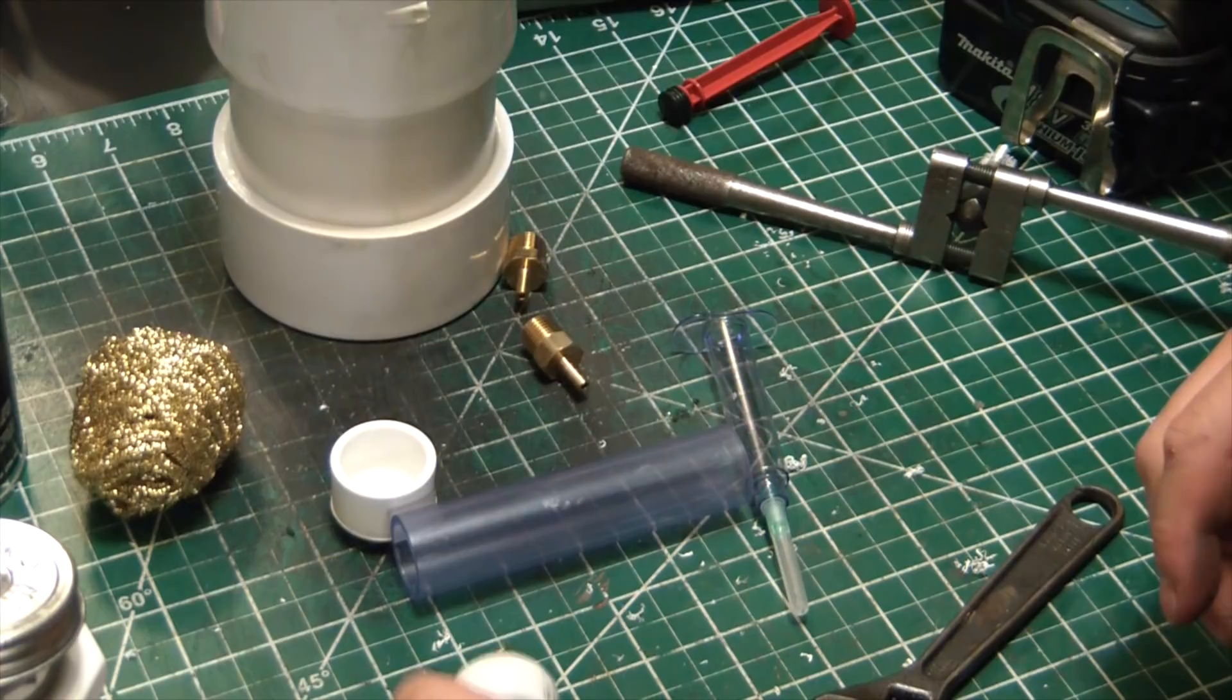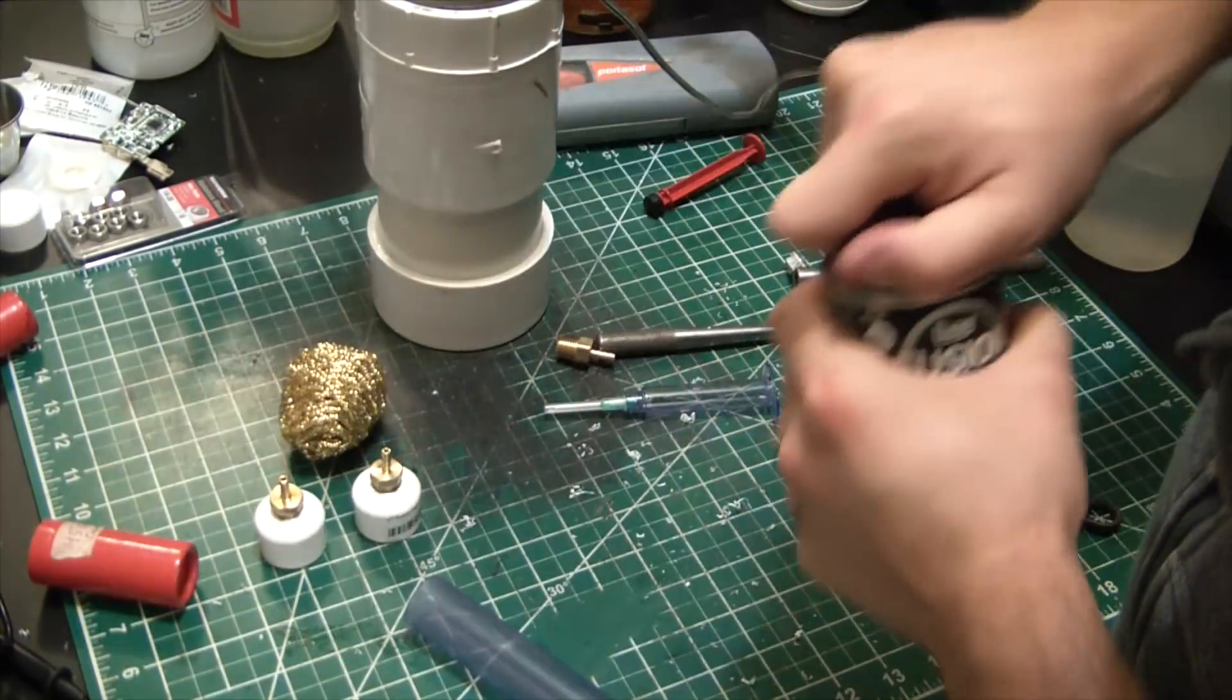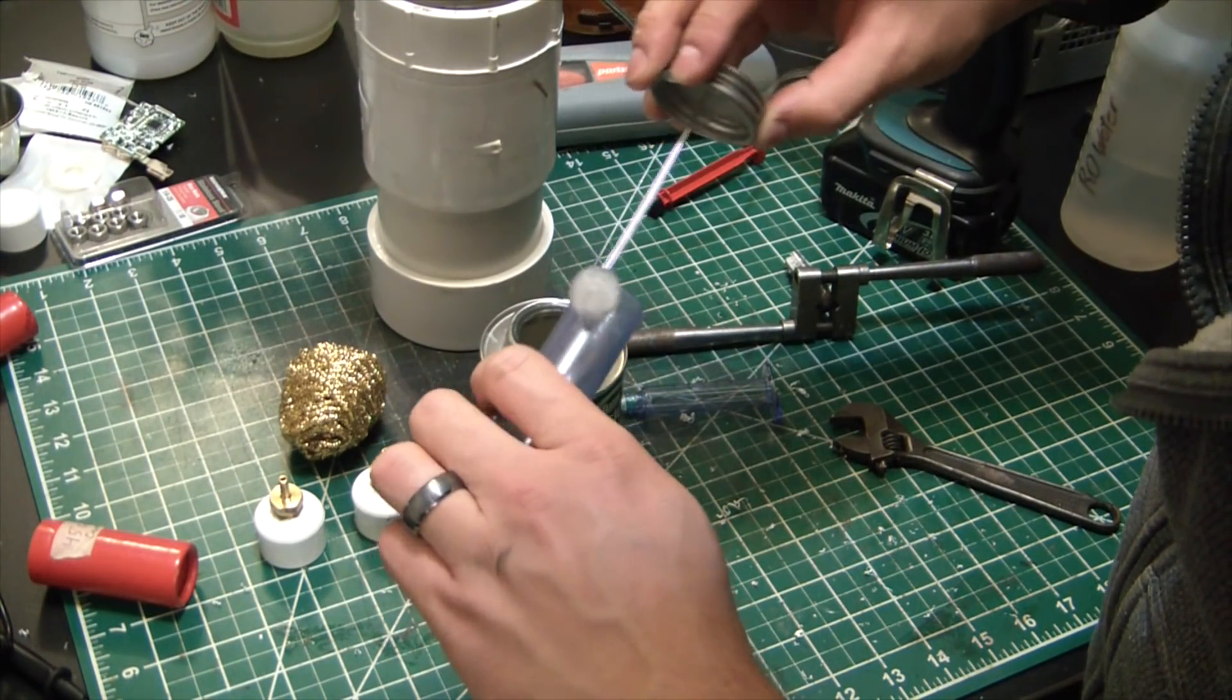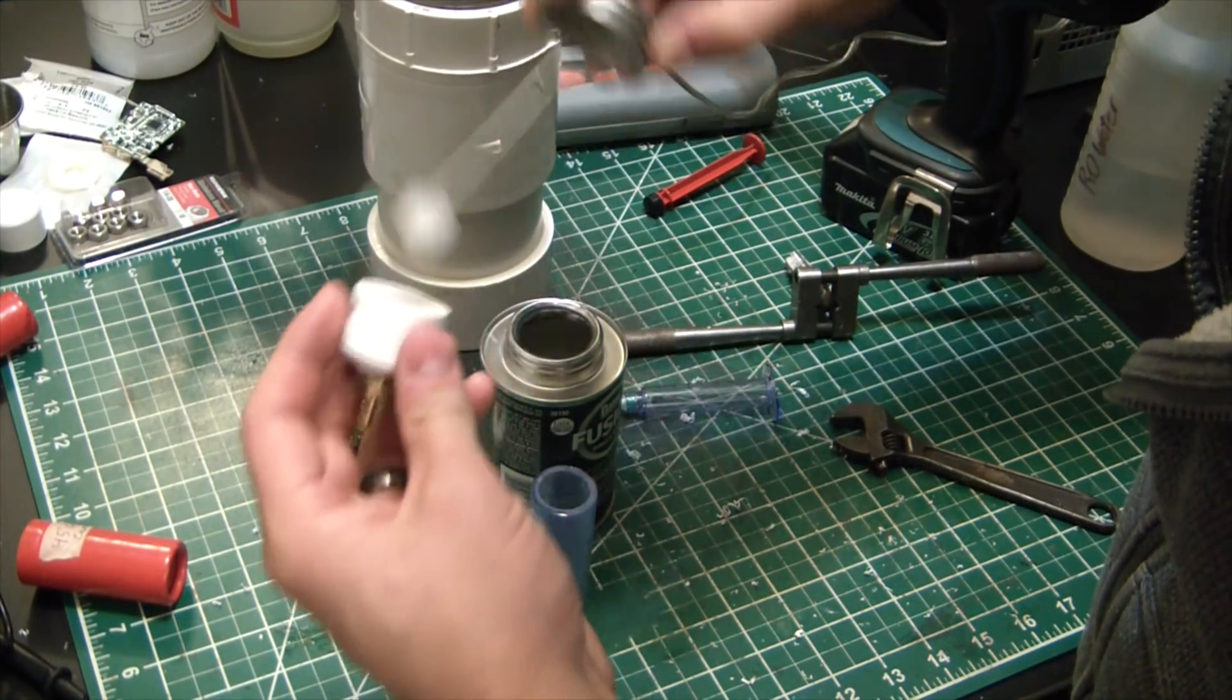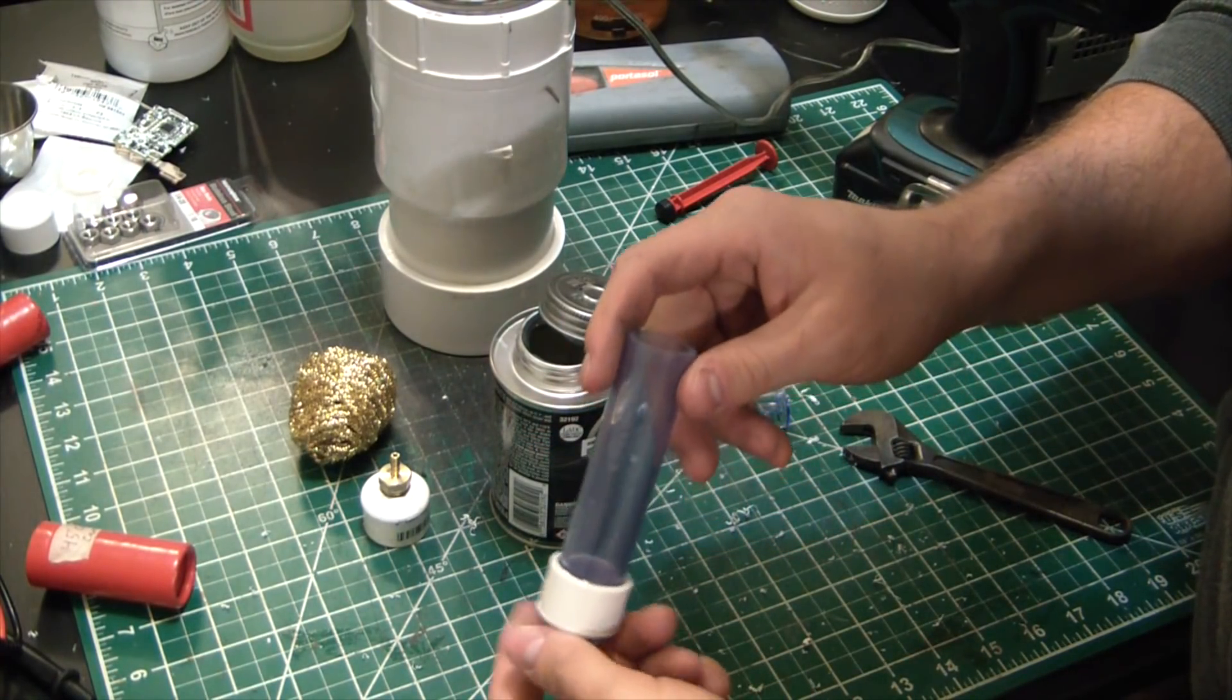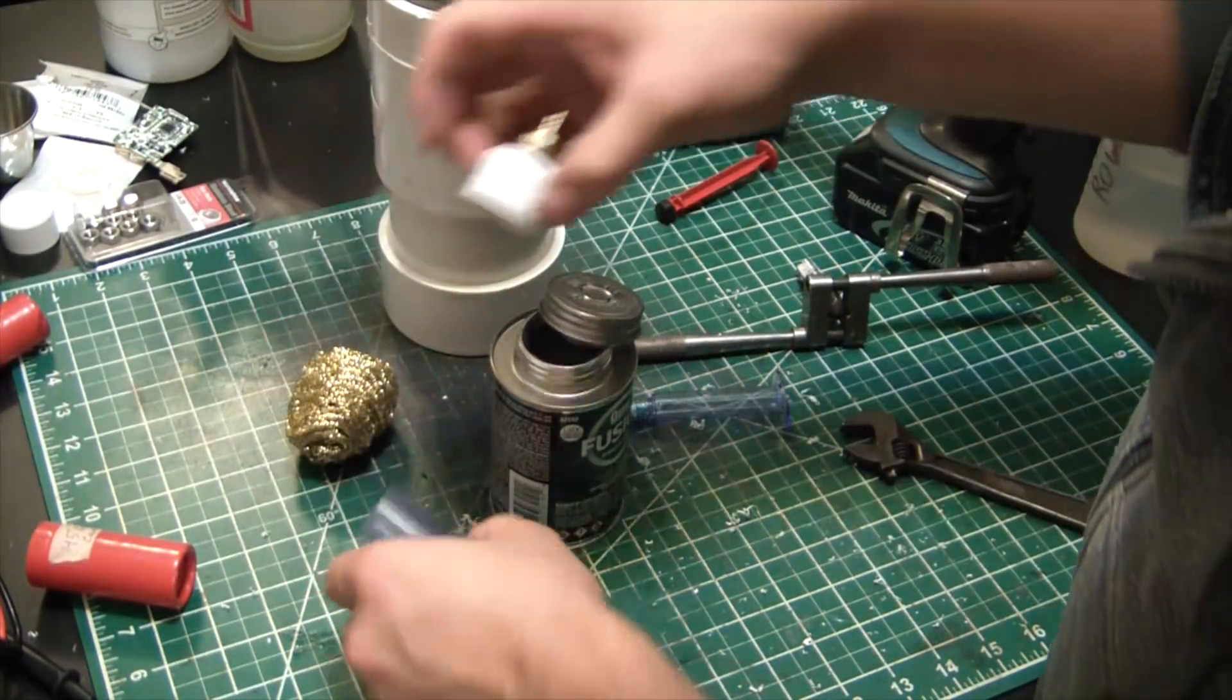All right, nice. So let's see how this PVC fusion works. Sealed up there pretty tight with a liberal application. Get down in there as well and give them the stick. Pretty nice stuff, is clear too, which is nice. When you use the purple primer, everything turns... I mean, this stuff's already kind of a purple tinge, but I like not having to fuss with the primer and all that.